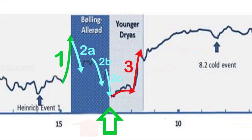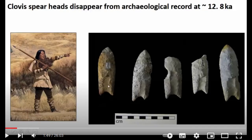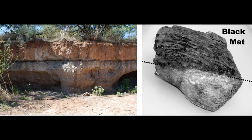Welcome to this video on the Meteorite Hypothesis of the Younger Dryas. Regarding the Younger Dryas and all related to it, like an ice age, extinctions and black mats, one single hypothesis seems to call most of the attention.